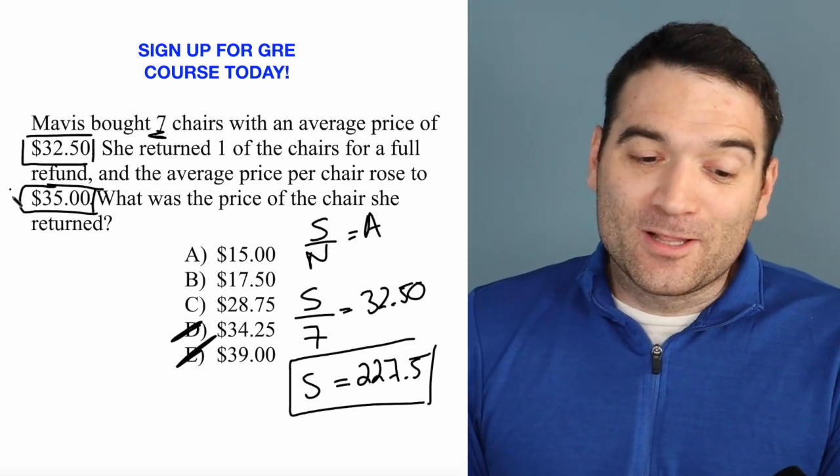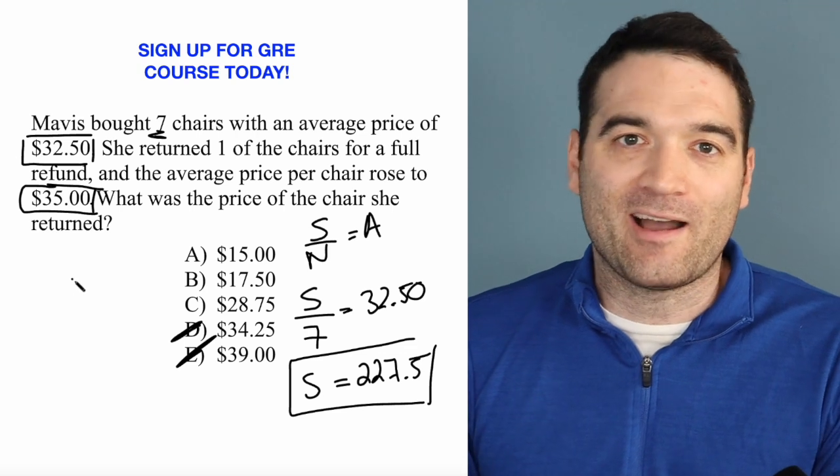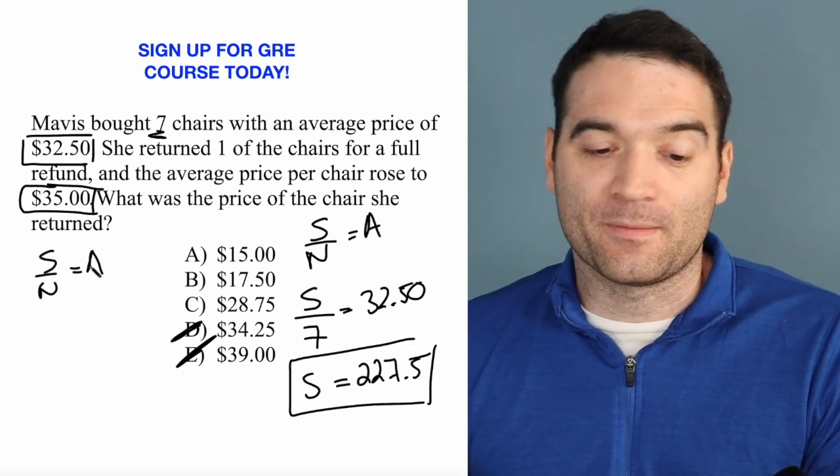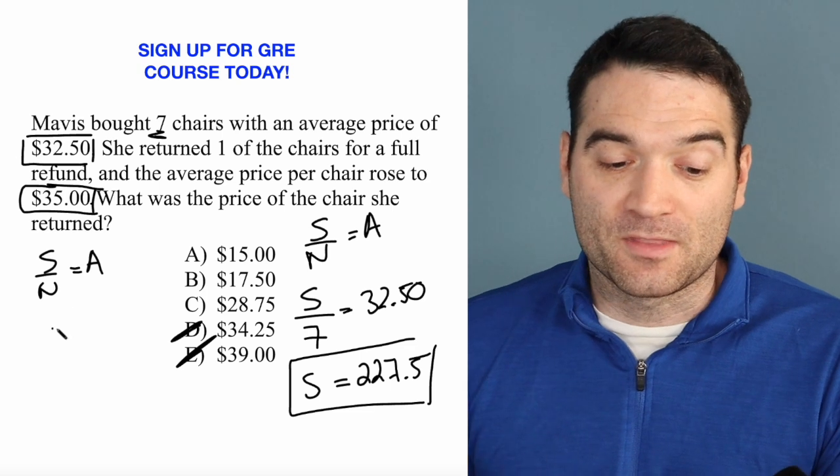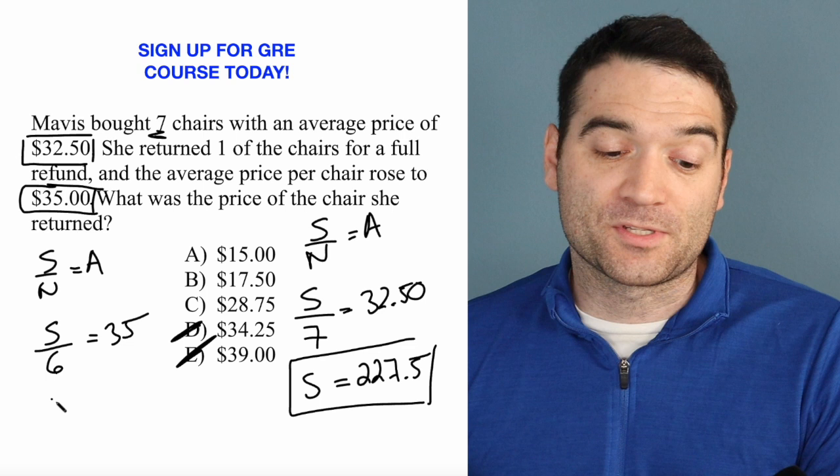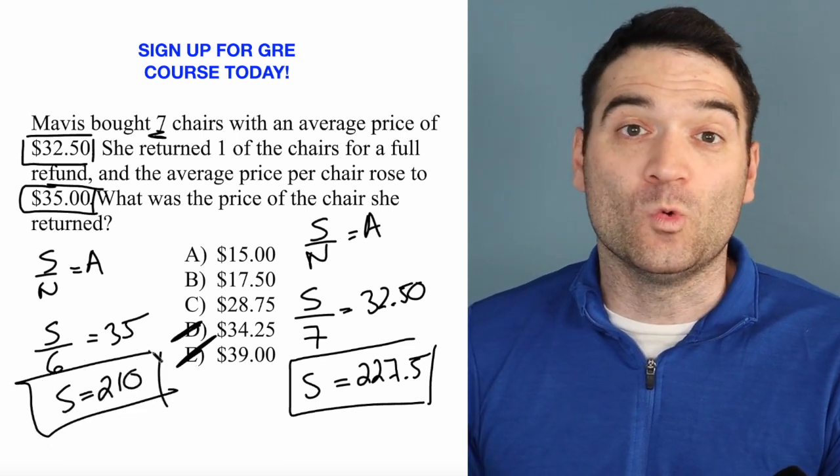Then we look at the second stage of the problem. I gave one of the chairs back, so now I only have 6 chairs. And again, with SNAH, the sum of the numbers divided by the number of numbers is equal to the average. The sum divided by 6 is equal to 35. And so I multiply both sides by 6, and I find that the sum is equal to 210.